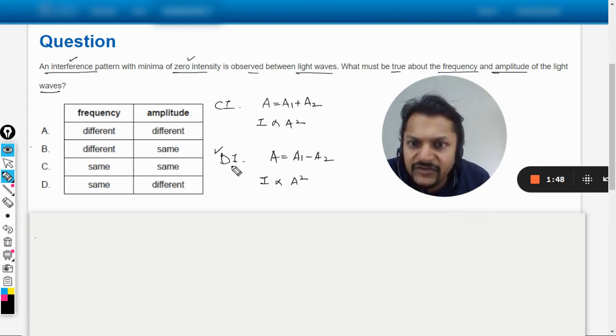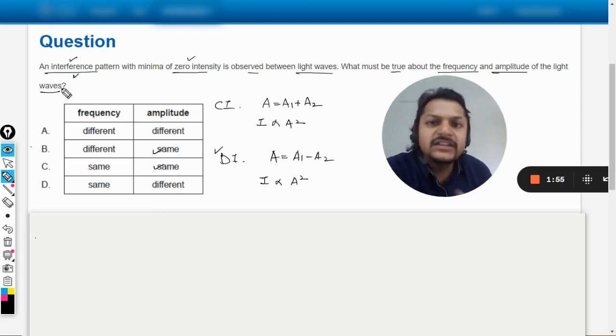As per the interference is concerned, there is this underlying condition that the two sources have to be coherent. And what do you mean by coherent? Coherent sources are those sources which have the same frequency and a constant phase difference. Phase difference is out of question here, but because the question is asking about frequency, we are sure that the frequency has to be same.